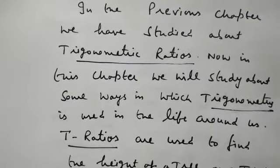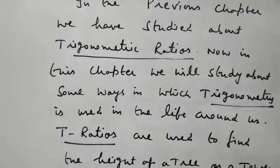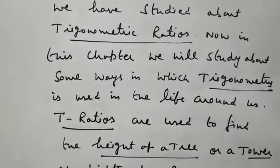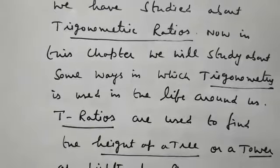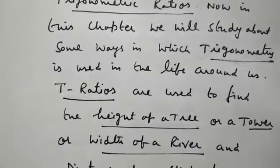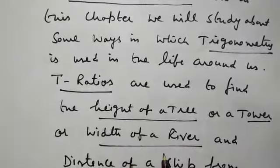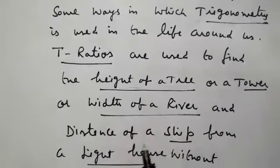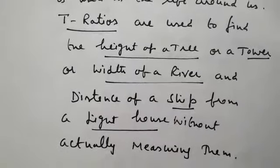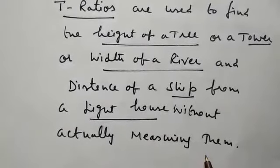Now in this chapter, we will study about some ways in which Trigonometry is used in the life around us. Trigonometric ratios are used to find the height of a tree or a tower, or the width of a river, and the distance of a ship from a lighthouse — without actually measuring them. We can find them using Trigonometric ratios.